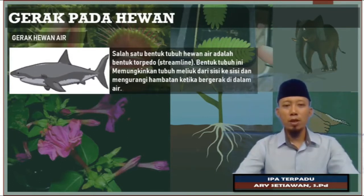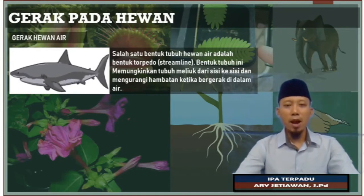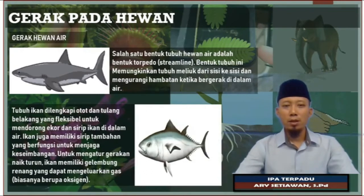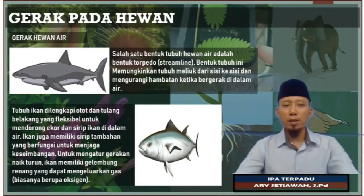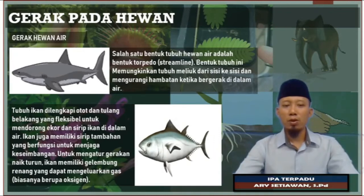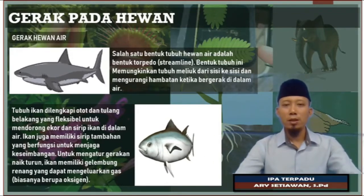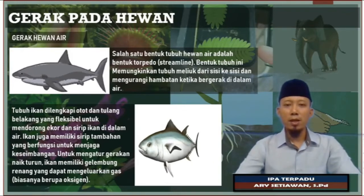Bentuk tubuh ini memungkinkan tubuh meliuk-liuk di dalam air, sehingga mengurangi hambatan ketika bergerak di dalam air. Ikan itu memiliki otot dan tulang belakang yang sangat fleksibel, sehingga dengan fleksibilitas tersebut akan mendorong ekor dan sirip ikan di dalam air. Selain itu, kenapa ikan bisa berenang dengan baik? Karena memiliki yang namanya gelembung renang.